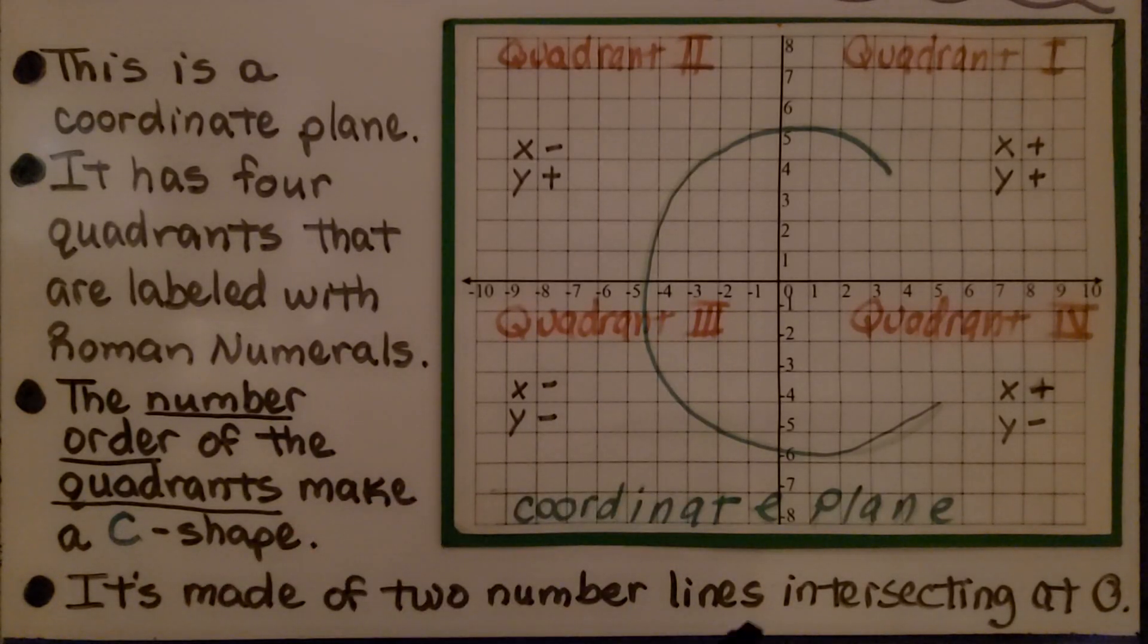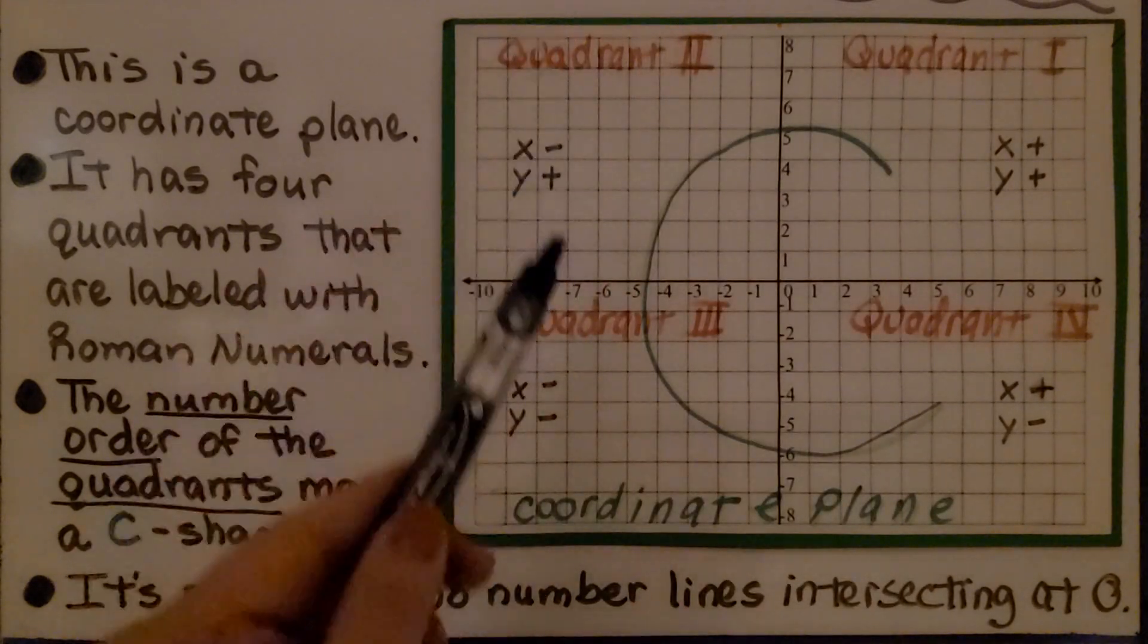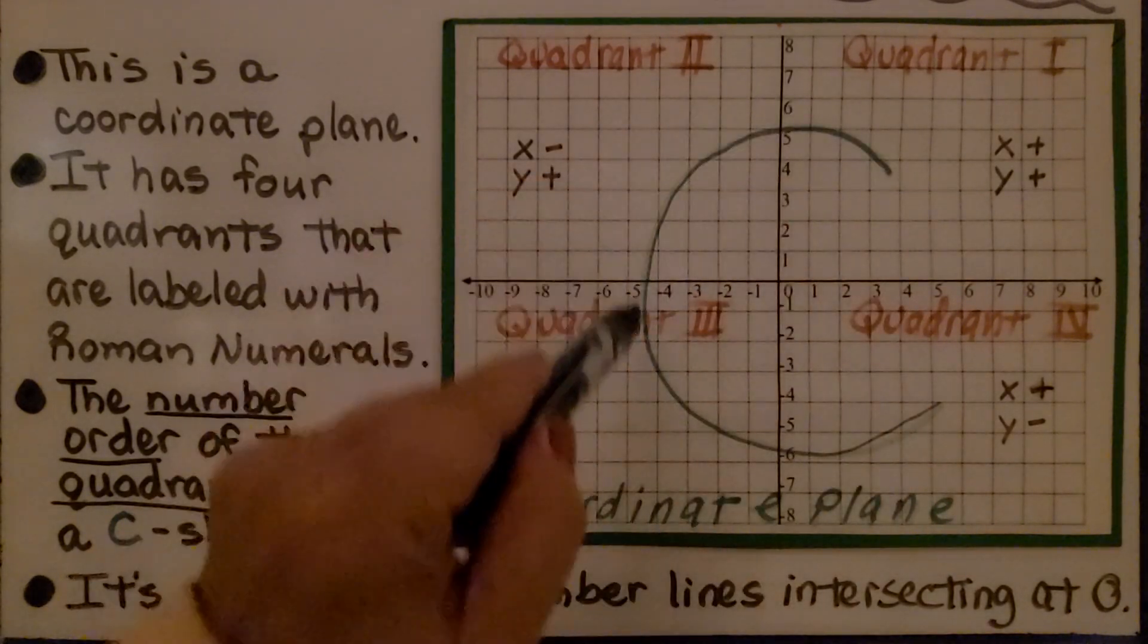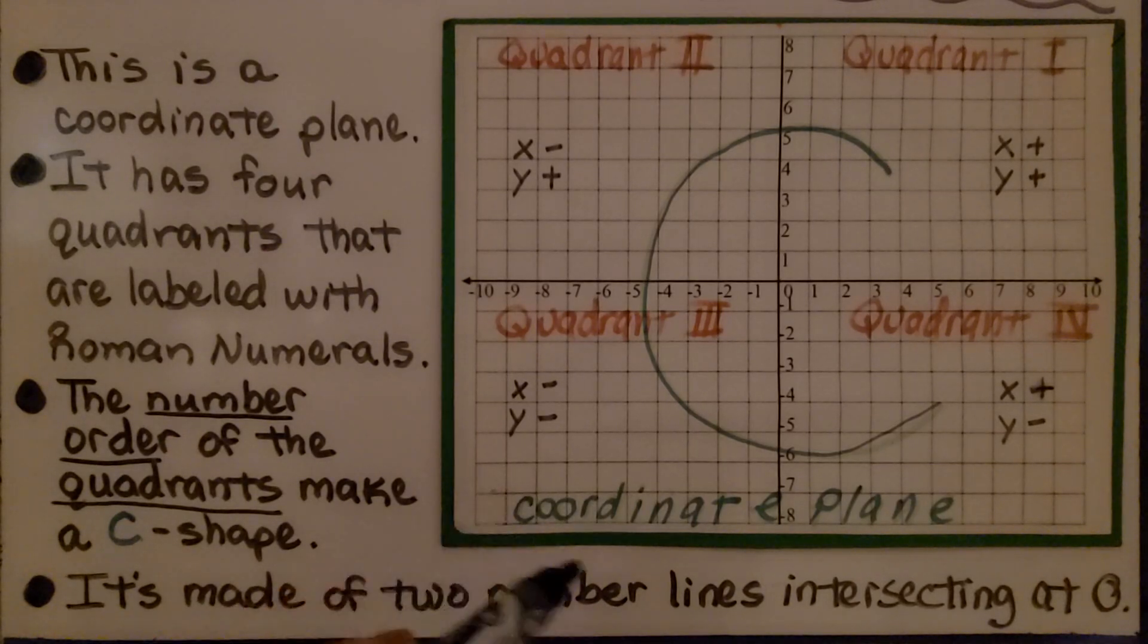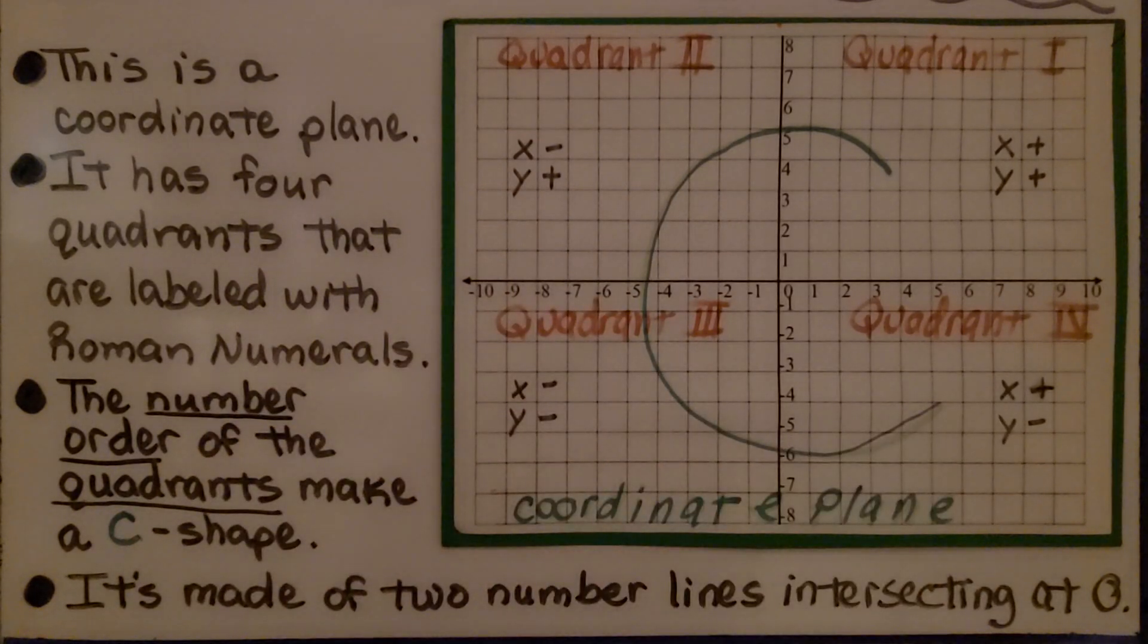It has four quadrants that are labeled with Roman numerals: Quadrant 1, quadrant 2, quadrant 3, and quadrant 4. The number order of the quadrants make a C shape, and I think of it as C for coordinate plane. We go 1, 2, 3, 4. That way you know which quadrant it is.